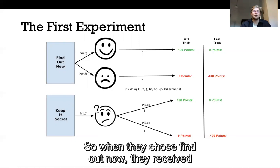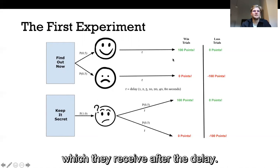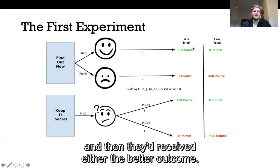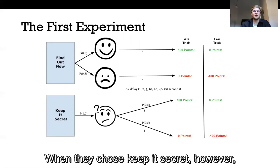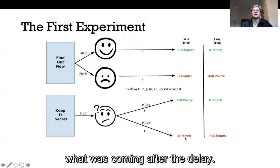So on each trial participants were able to choose between find out now and keep it secret. So when they chose find out now they received a cue which told them about the outcome which they would receive after the delay. So if it was going to be a good outcome they received the smiley face and then they received the better outcome. When they received a sad face this meant they were going to receive the worst outcome after the delay. When they chose keep it secret however they received no early information. They received a confused face regardless of what was coming after the delay.